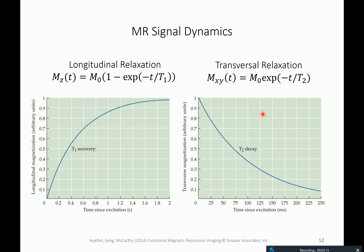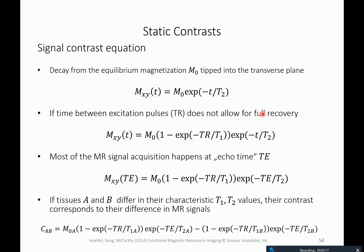These two processes are important for understanding how T1 or T2 weighted images can be generated. What is developed on this slide is a signal contrast equation that explains how one can use different times of sending excitation pulses and different times of acquiring the data to emphasize certain tissue properties. The decay in the transverse plane starts at M0, because at time zero the exponential of zero is one, giving M0, and then it decays.